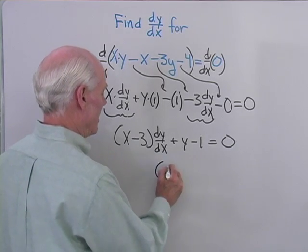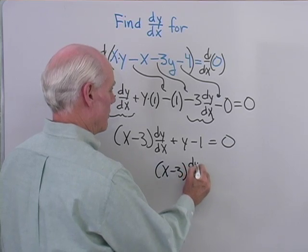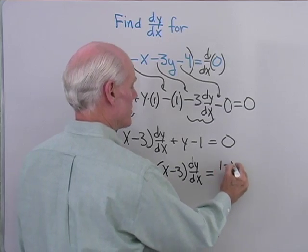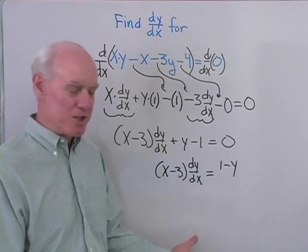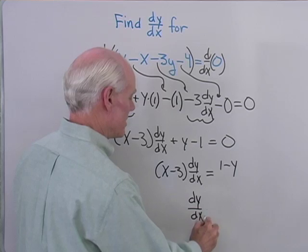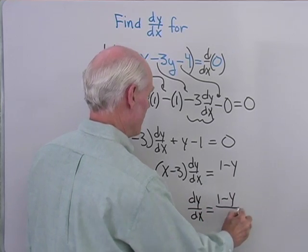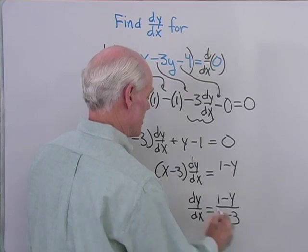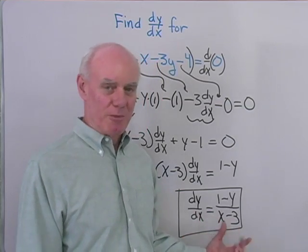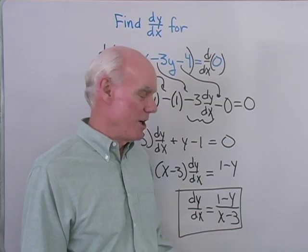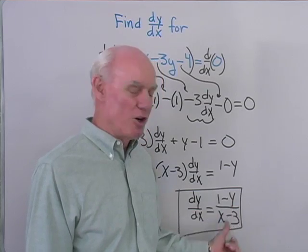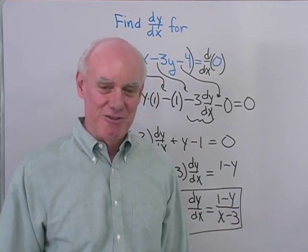So now I have x minus 3 times dy/dx equals 1 minus y. Dividing both sides by x minus 3, dy/dx equals 1 minus y all divided by x minus 3. When you do implicit differentiation, a lot of times your answer ends up with both x and y in it, and that's okay. Whatever we want to do next, we'll be able to do it with both x and y in this derivative.